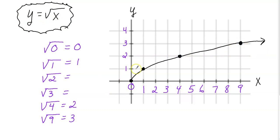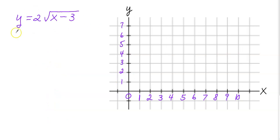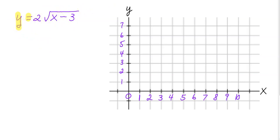Now we can stretch this graph, shift it left and right, and so on — that's what we're going to do, we're gonna apply transformations. So let's say we wanted to graph y equals two times the square root of the whole quantity x minus three. The first thing you wanna do is identify your parent function. The way I do that is I look at everything without the numbers — just the y equals the square root of x, not including the two and the minus three. That's our parent function: y equals the square root of x.